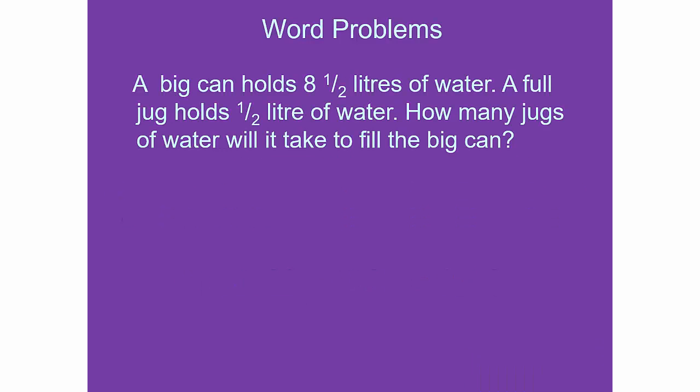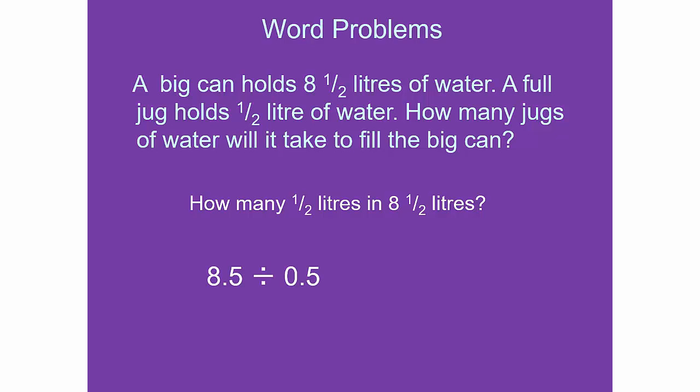A tank can holds 8.5 liters of water. A full jug holds 0.5 liters. How many jugs of water will it take to fill the can? 8.5 divided by 0.5 gives you 17 jugs.